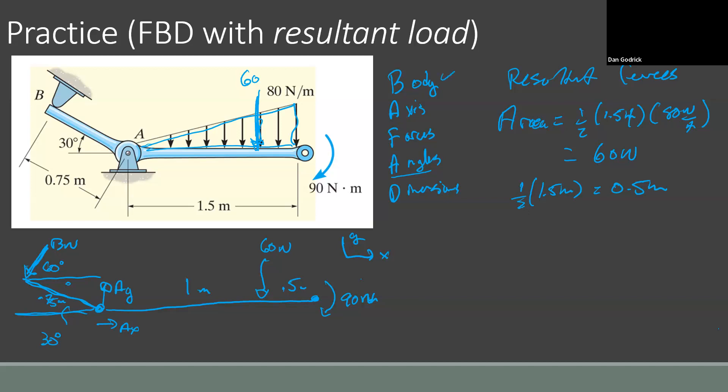There we go. So that's our free body diagram. We can actually make it a little easier to see. Put a little meter there. Do we have a body? Yep. Do we have axes? Sure. Forces, angles, and dimensions.